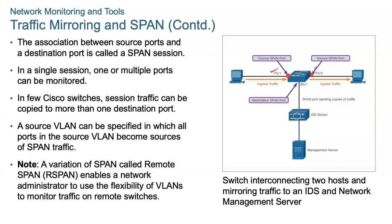In a single SPAN session, one or multiple ports can be monitored. On some switches, session traffic can be copied to more than one destination port. Alternatively, a source VLAN can be specified, making all ports in that VLAN sources of SPAN traffic. Each SPAN session can have ports or VLANs as sources, but not both simultaneously. A variation called remote SPAN (RSPAN) enables a network administrator to monitor traffic on remote switches using VLANs.